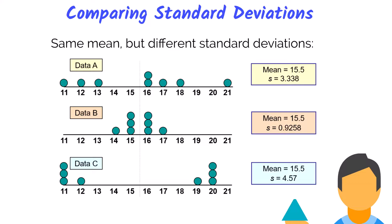In A, the sample standard deviation is 3.338. In B, it's 0.9258. And then, finally, in C, it's 4.57.